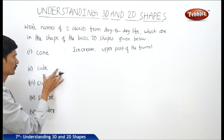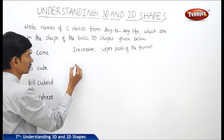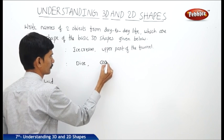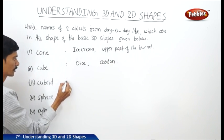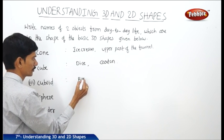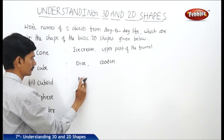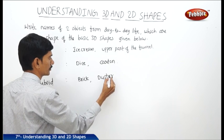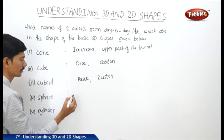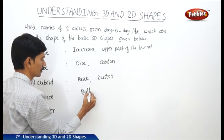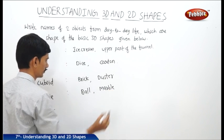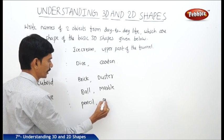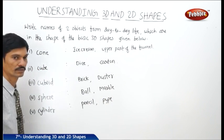For the 3D shape cube, we can take a dice and a sugar cube. For cuboid, we can find a brick, a duster, or a textbook. For sphere, any ball or any marble. For cylinder, a pencil or any pipe.